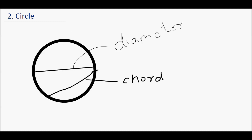If we draw a line from the center of a circle to any point on the circumference, this is called a radius. So to summarize: the line inside the circle is a chord, if it passes through the center it is a diameter, and the line from center to circumference is the radius. You can say the radius is half of the diameter.